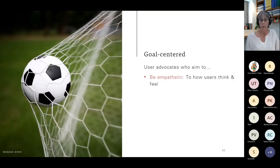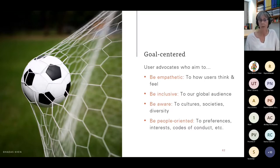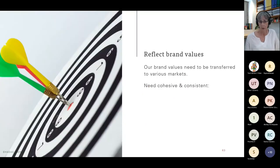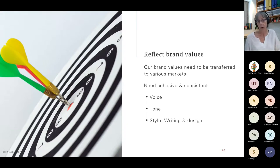Heuristics help keep us grounded. We want to be goal-centered, empathetic, inclusive, aware, and people-oriented — everything centered around our users and the different types of users. We need to reflect our brand values, which is where your style guide comes into play. Your brand values need to be transferred to various markets, so you need to be cohesive and consistent by keeping a constant voice, tone, and style — both in your writing and in your design, which could include, for instance, your colors.